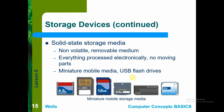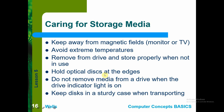Solid-state storage devices include miniature memory cards and USB flash drives. They are non-volatile, processed electronically, and have no moving parts. These are used in digital cameras, MP3 players, and other devices that gather information. USB drives can cover higher data capacities — for example, 4GB, 16GB, 32GB, or higher — for data storage.